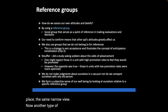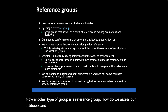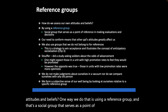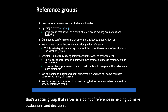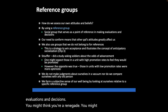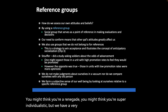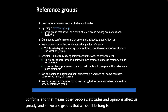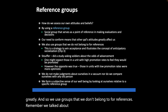Another type of group is a reference group. We assess our attitudes and beliefs by using a reference group — a social group that serves as a point of reference in helping us make evaluations and decisions. Even if you think you're super individualistic, we have a very strong need as human beings to conform, and other people's attitudes and opinions affect us greatly. We also use groups we don't belong to as references, which connects to anticipatory socialization discussed in chapter three.